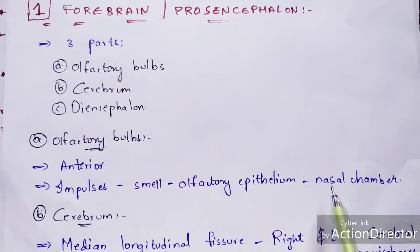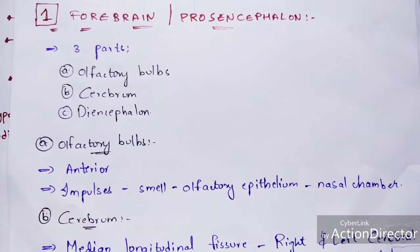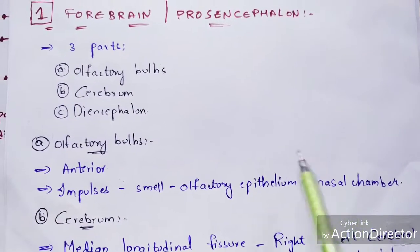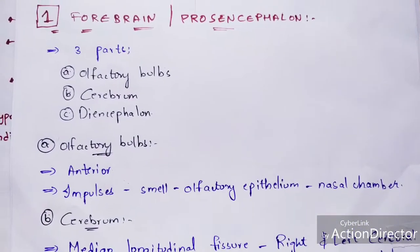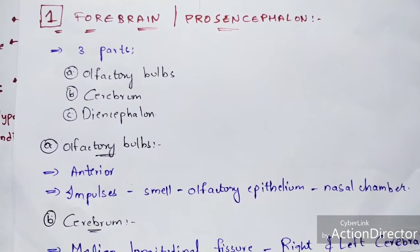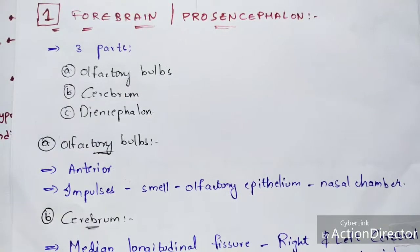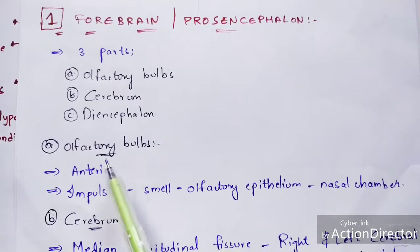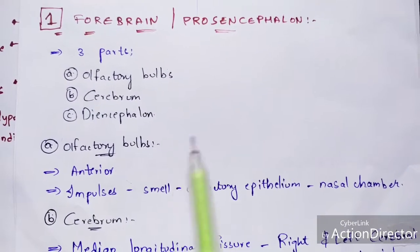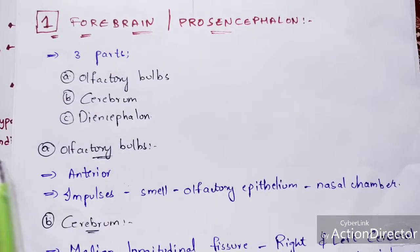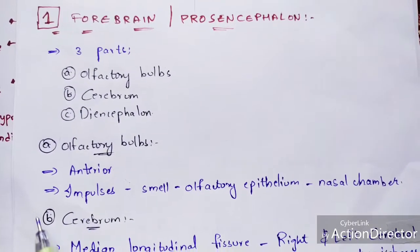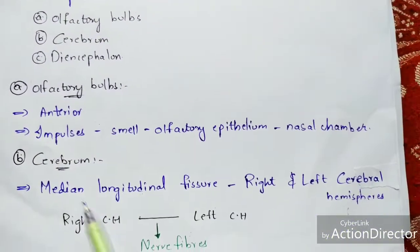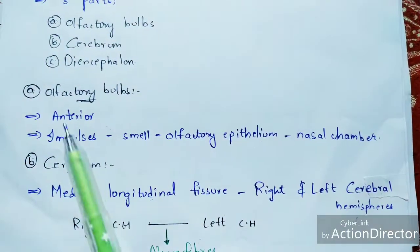The nasal chamber, which is inside the nose, consists of olfactory epithelium. When you sense a smell — for example, a sweet smell — you can recognize it as sweet only because of the olfactory bulbs present in the brain. The olfactory bulbs contain olfactory receptors which receive smell signals from the olfactory epithelium, allowing you to recognize different smells.